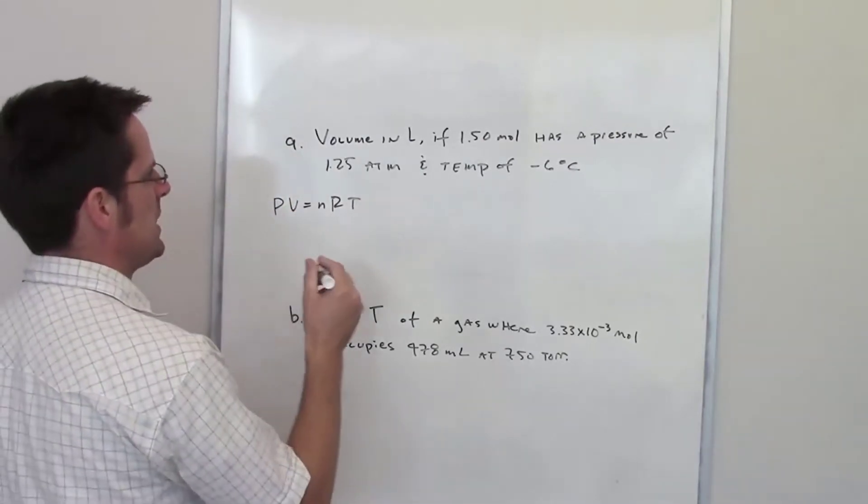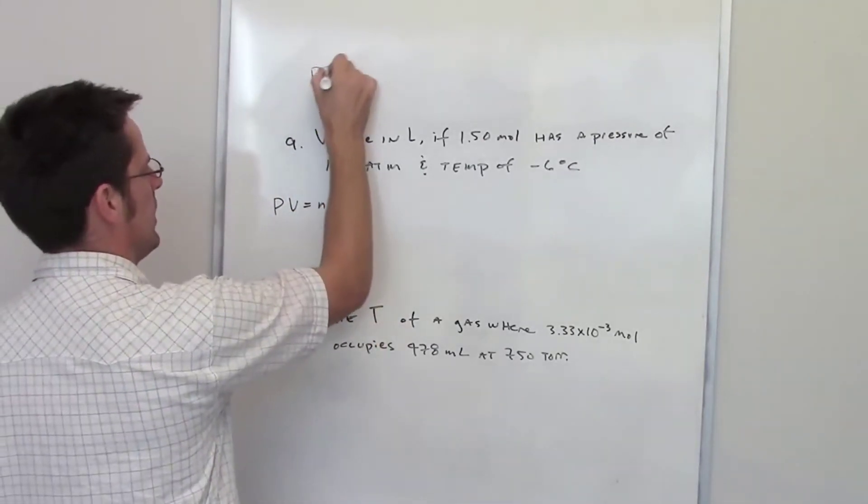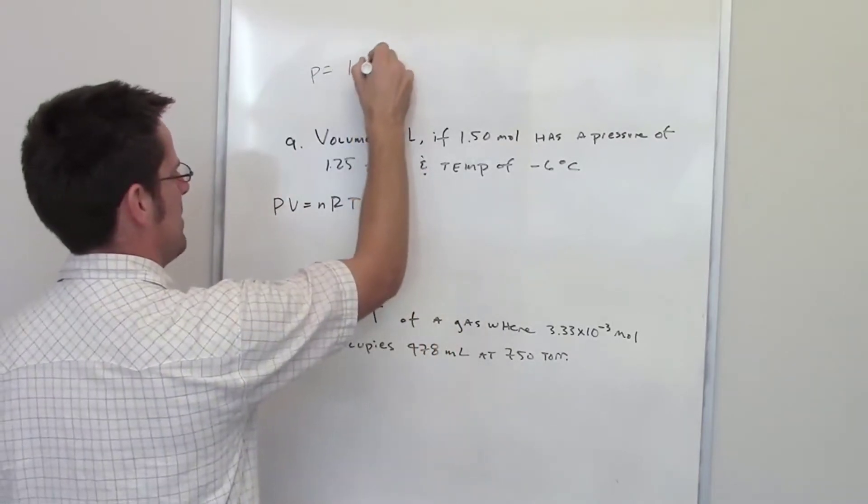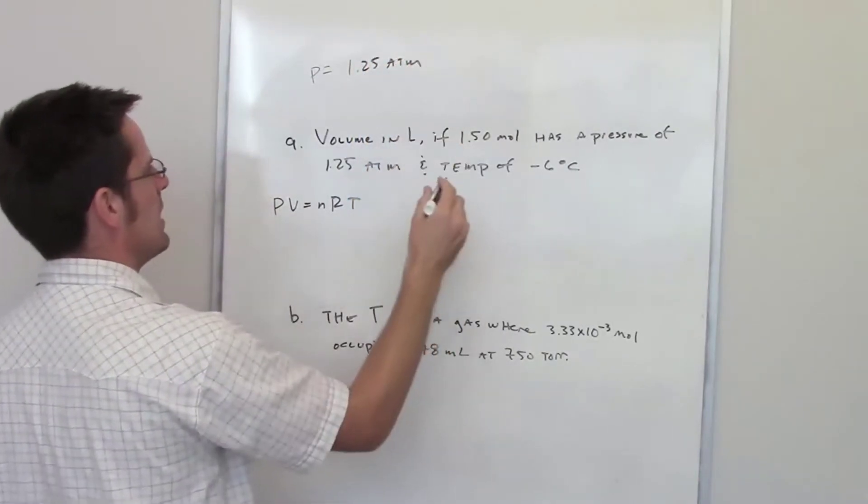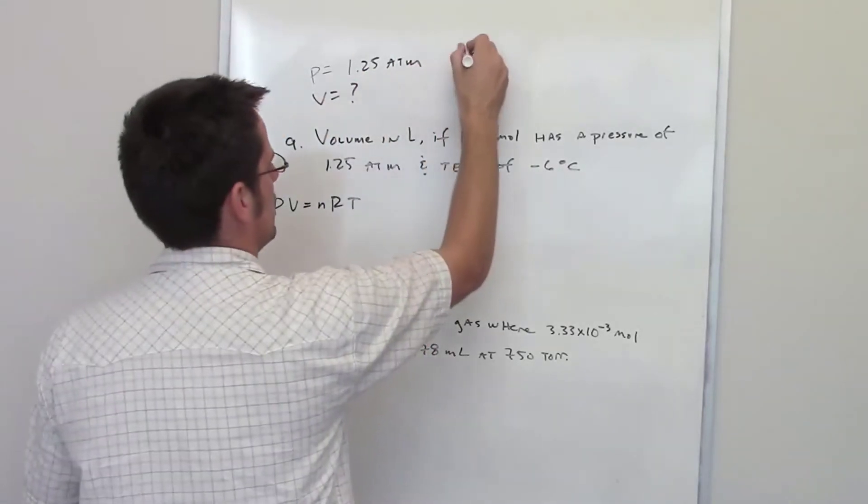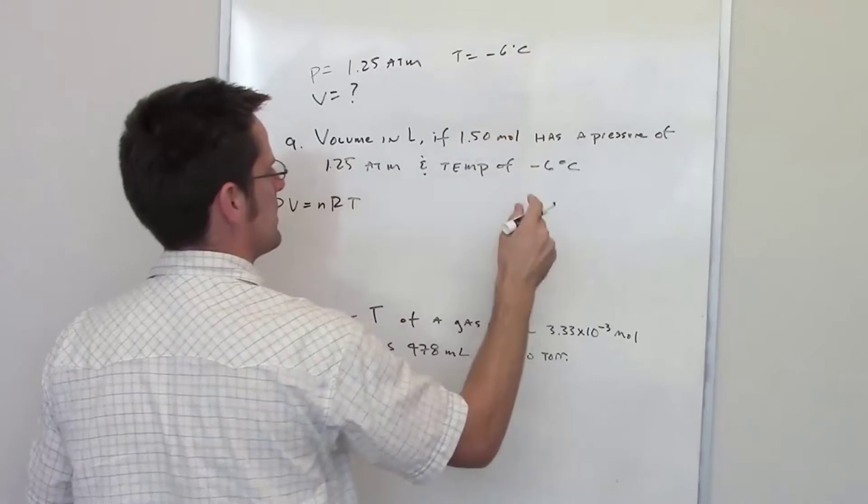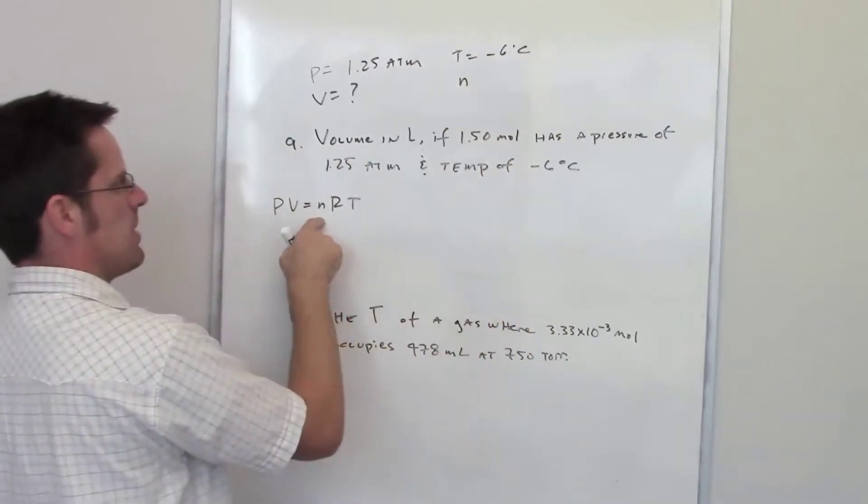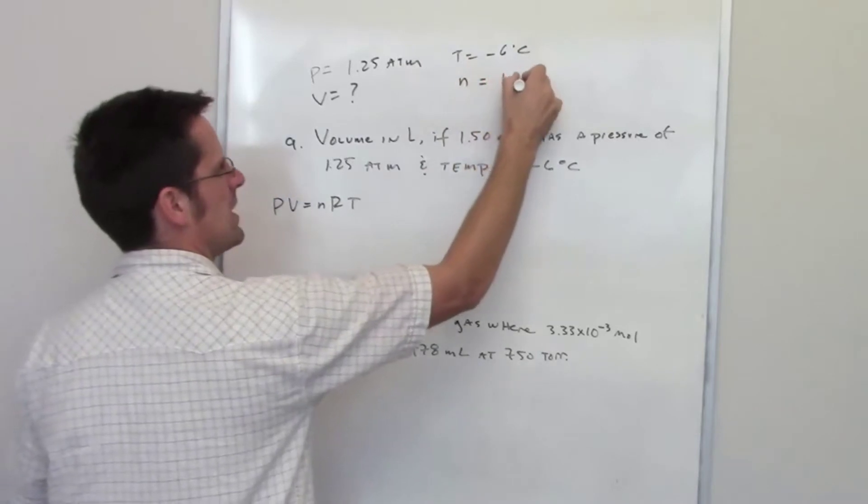So we have P, which in this case is going to be 1.25 atmospheres. I've got V, which I don't have. V is the thing that I'm trying to figure out. The temperature is negative 6 degrees Celsius, and the number of moles n from that equation is equal to 1.50.